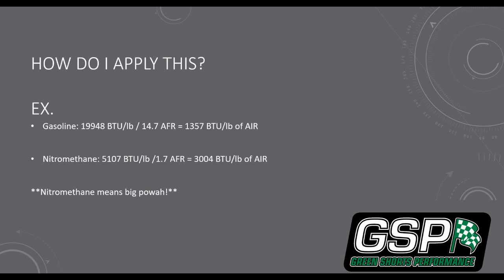We're going to use lower heating values along with stoic to do the math. If you have gasoline at 20,000 BTUs per pound and divide that by your air-fuel ratio, you figure out how many BTUs per pound of air you get. BTUs are units of energy — more energy means more work applied to the piston. Here's some interesting math: why would you run nitromethane if you have to run almost the same amount of fuel as air? The answer is you get over double the amount of energy per unit of air.